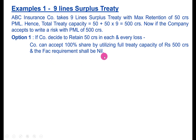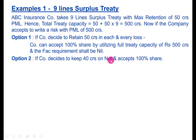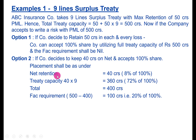In Option 2, the company decides to retain only 40 crores and still accepts 100 percent share. The net retention is 40 crores, which comes to 8 percent of 100 percent (40 divided by 500). In that situation, the treaty capacity shall be reduced and they will not be able to utilize the full treaty capacity.